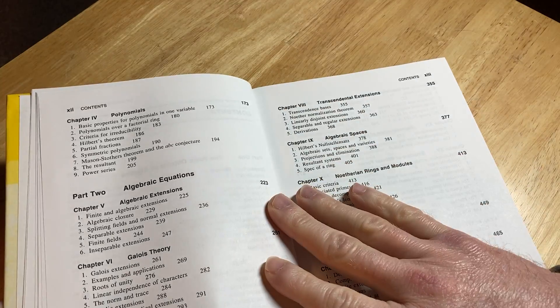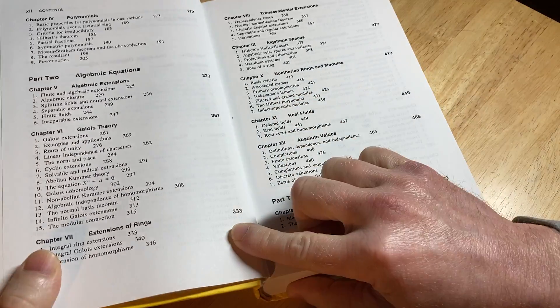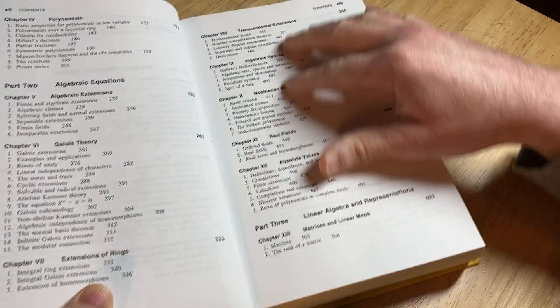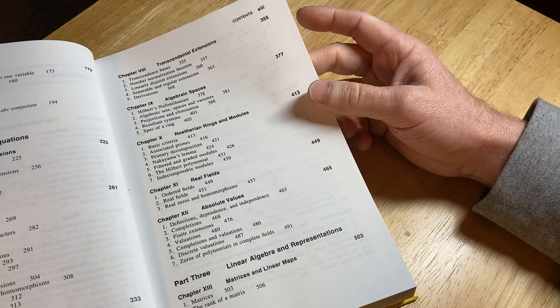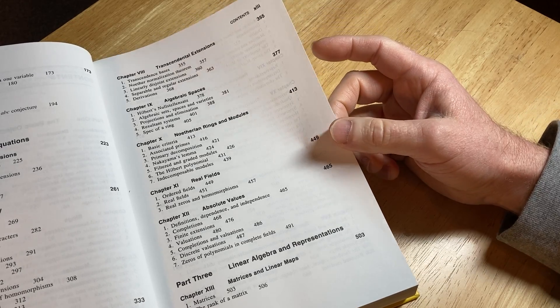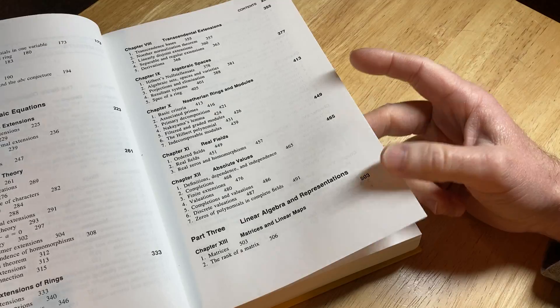Polynomials, and then algebraic equations. Extensions, Galois theory, extensions of rings. And you move through all of this. Transcendental extensions, algebraic spaces, and aetherian rings and modules, real fields, absolute values, then linear algebra and representations.